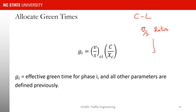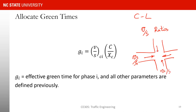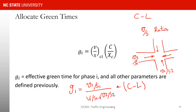For a quick example: if for phase 1 the critical v/s is v_1/s_1 and for phase 2 it is v_2/s_2, then g_1 equals [v_1/s_1 divided by (v_1/s_1 + v_2/s_2)] multiplied by (C - L). For g_2, you substitute v_2/s_2 in the numerator. This distributes the available effective green proportionally among the phases.